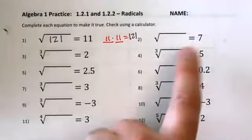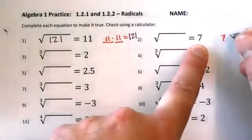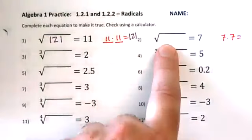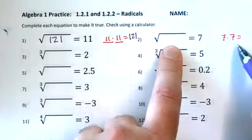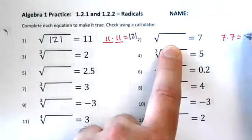So this time I'm giving you the answer. The answer multiplies by itself to equal the thing inside. What's going to go inside here? If I multiply 7 times itself, what am I going to get? 49.